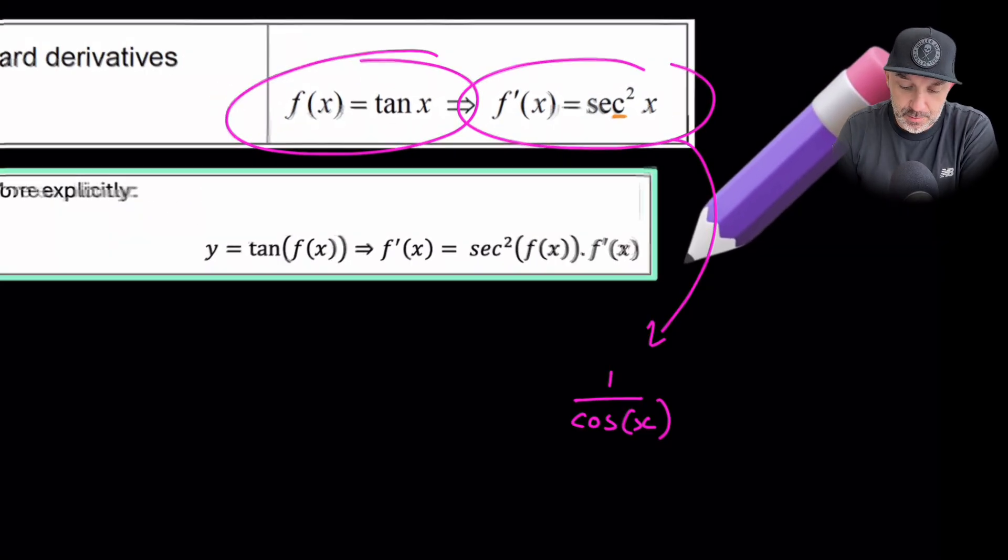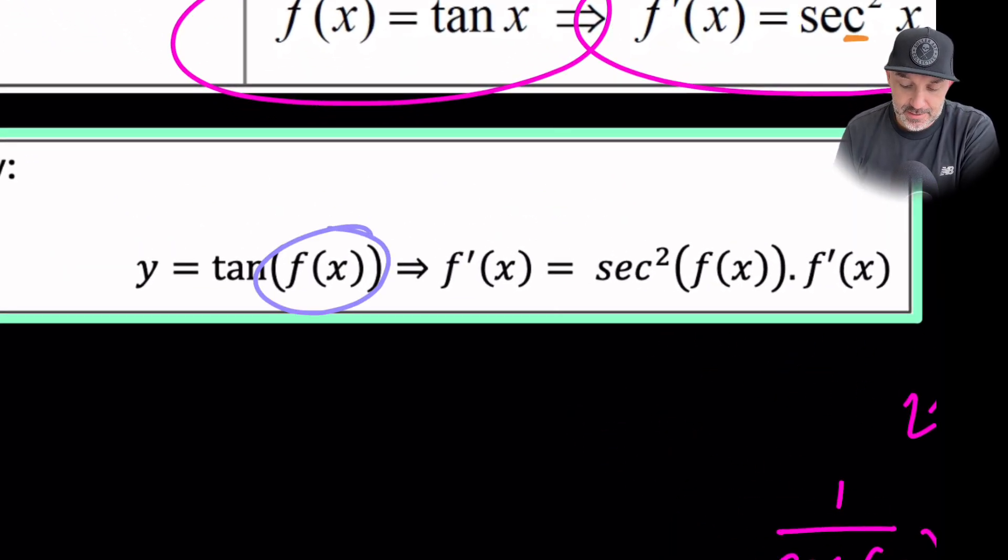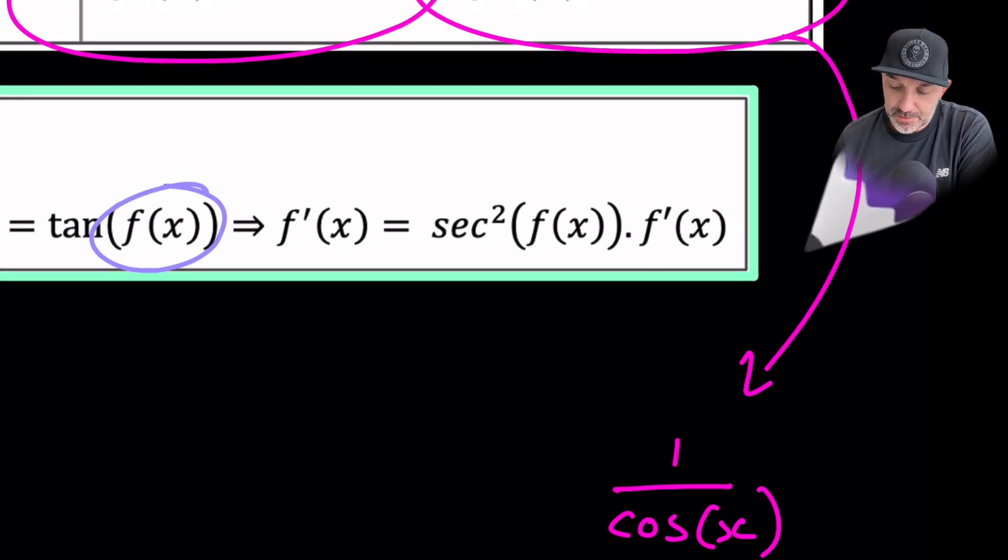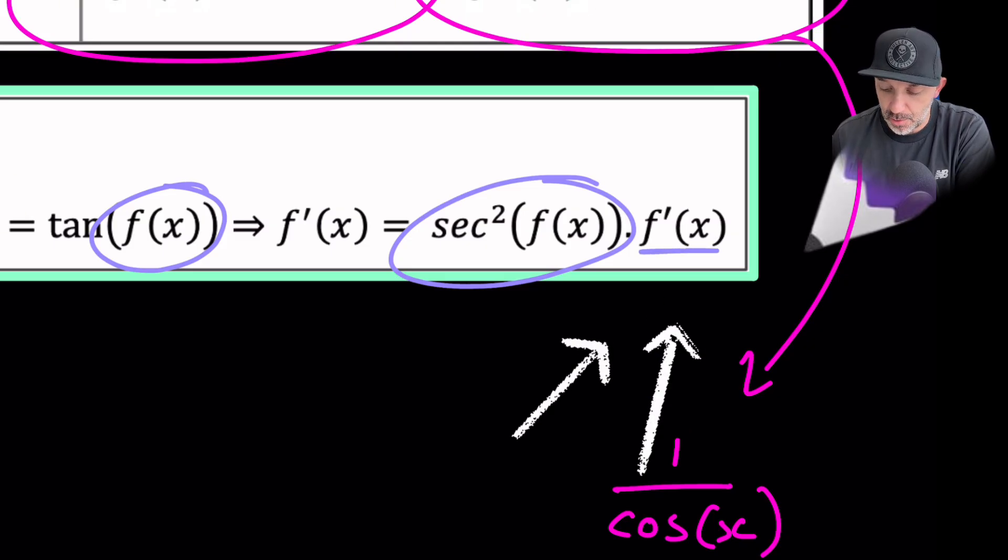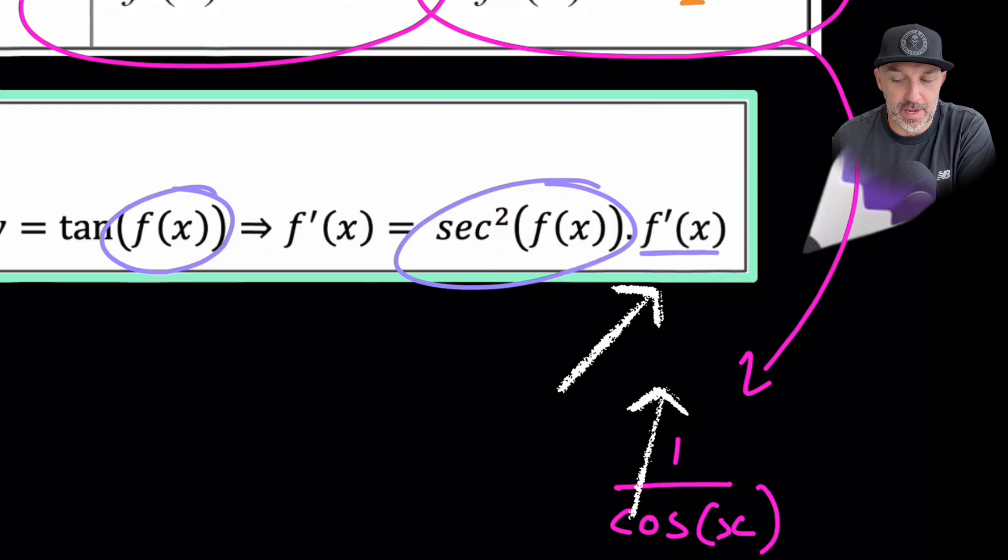But more explicitly we need to note that if tan has a function of x here, so it isn't just x on its own, what we need to be mindful of is that it turns into sec squared again, but then we must multiply by the derivative of f.